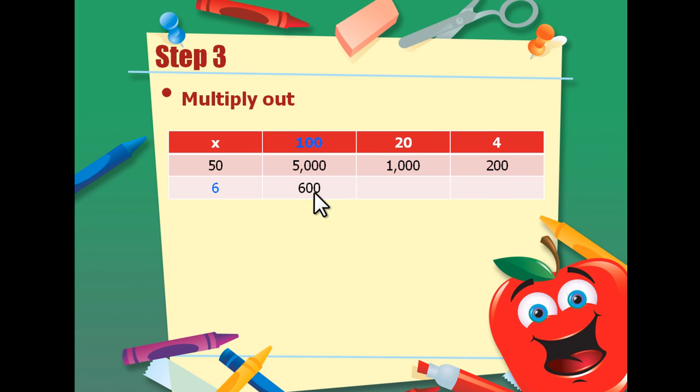Now we're going to move down to the next row. 6 times 100 equals 600. 6 times 20 equals 120. And 6 times 4 equals 124.